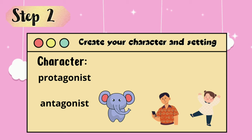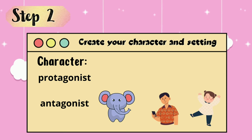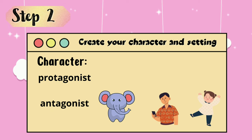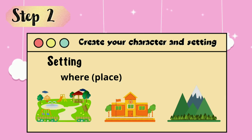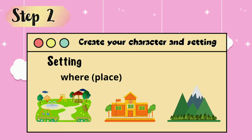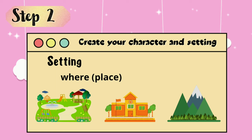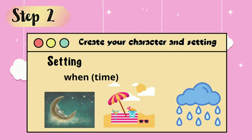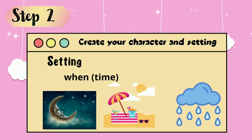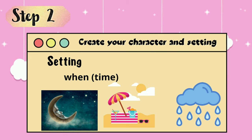Step 2: Create your character and setting. Characters are categorized as protagonist and antagonist. Protagonists are the main character, while antagonists are the villain. Setting talks about the place and time when the story happened. For place, you can use the playground, school, or the mountain. For time, you can make the story happen at night, at summer, or on rainy days.